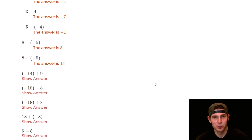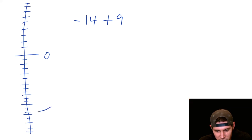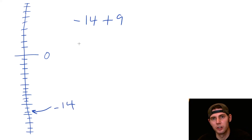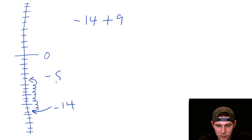Next is negative fourteen plus nine. We start fourteen in the hole and then the plus nine means we go up nine: one, two, three, four, five, six, seven, eight, nine. That puts us at negative five. So the answer is negative five.